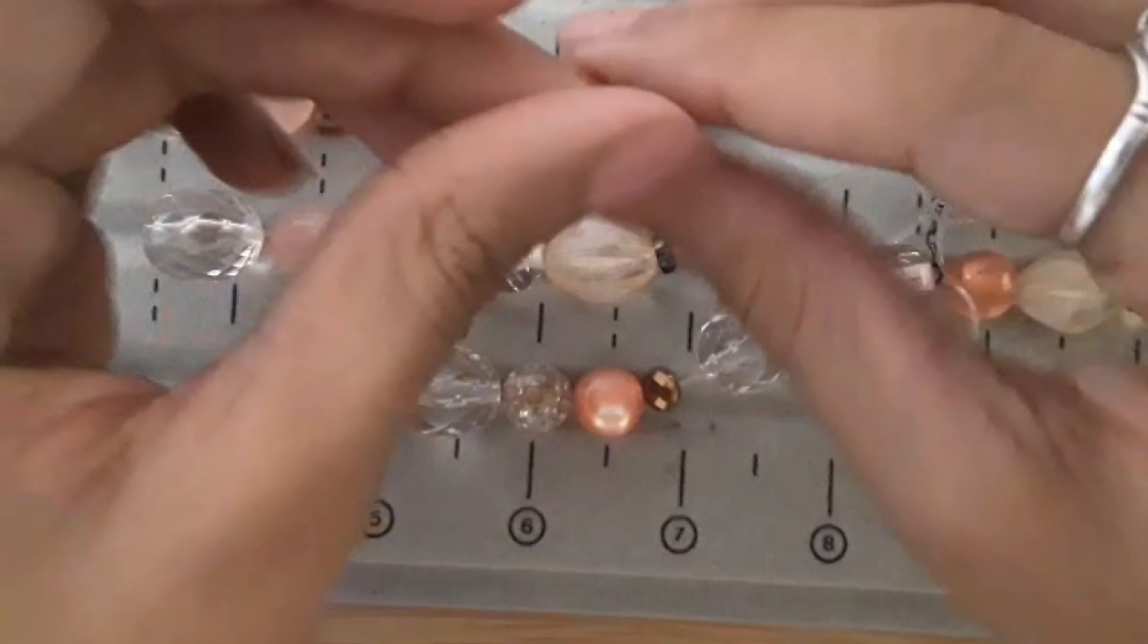Now we are going to knot these elastic stretch cords together. So first you're going to take your first row and take the other side of the first row, and now we're just going to tie that together. So first you're going to do a regular tie.